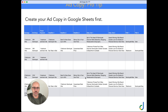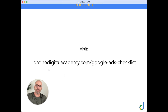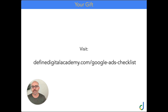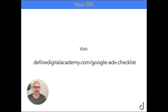As promised, here is your free gift. Go to definedigitalacademy.com/Google-Ads-checklist — the link will be in the description. That will take you to a special page on my website where you can access that document and see how I go about optimizing my campaigns every 72 hours, every week, every month, and every year. Thanks again for sticking around — it's been a pleasure teaching you, and I look forward to seeing you soon.